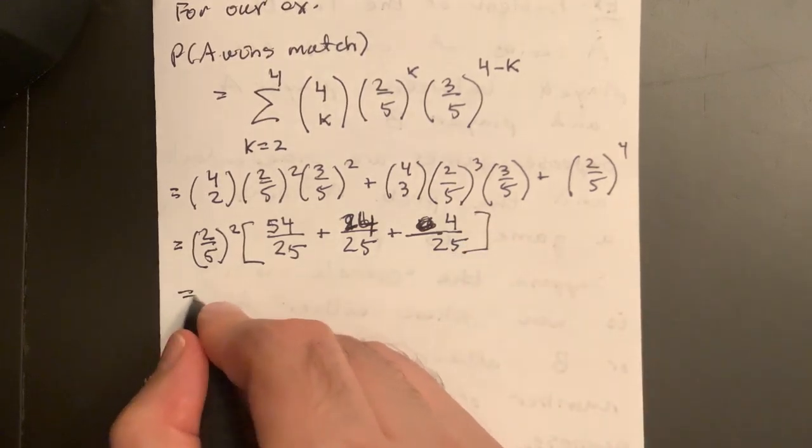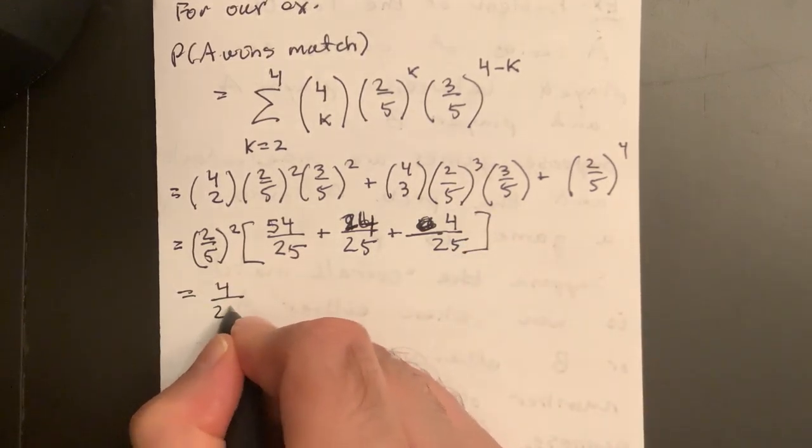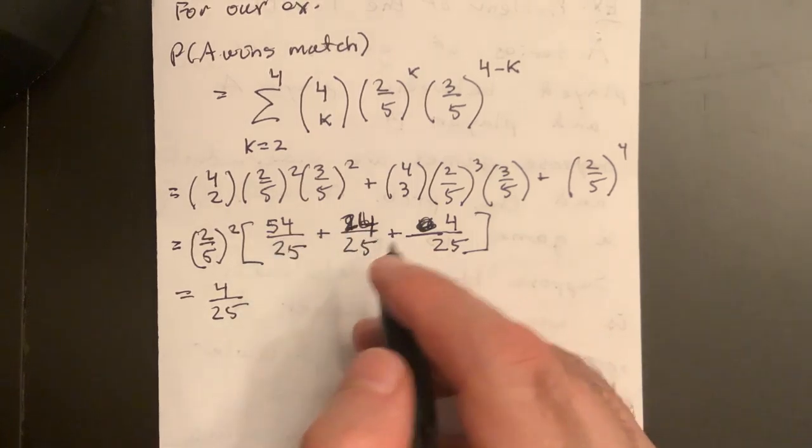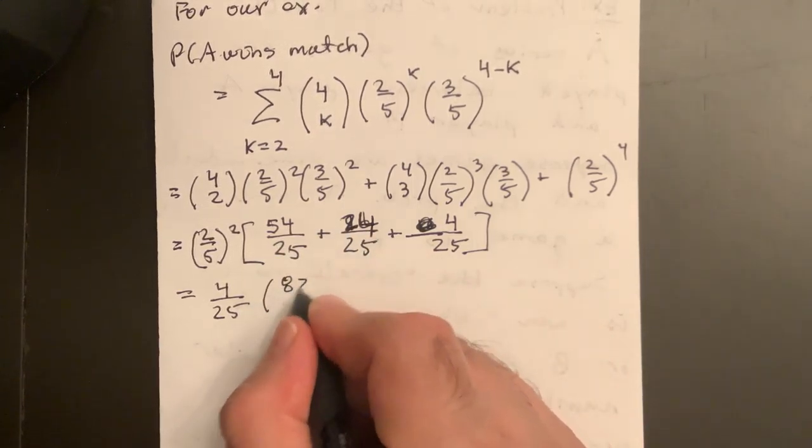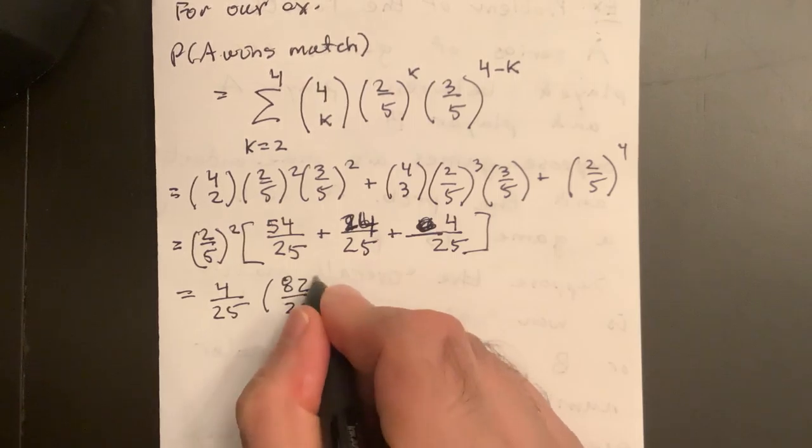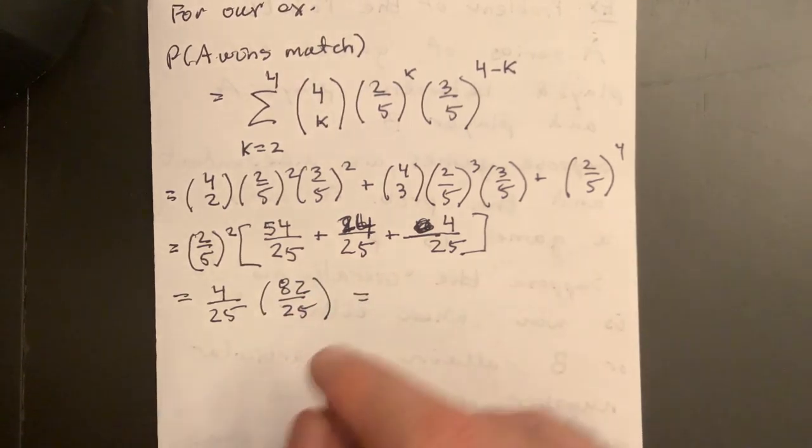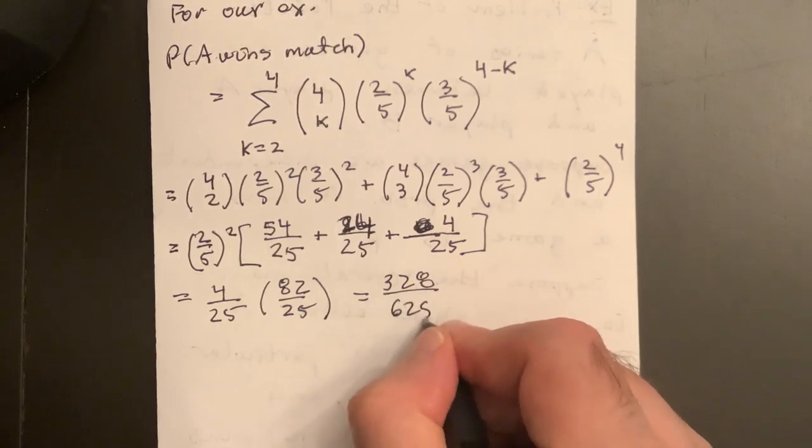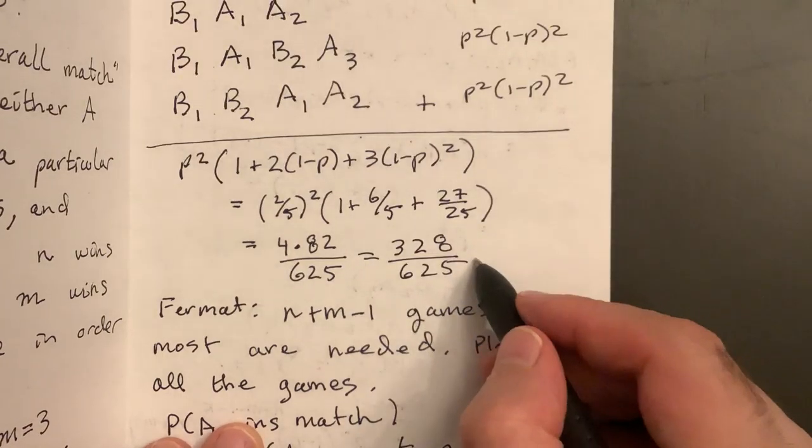So this is equal to four over 25 times 78, 82 over 25. If I multiply these, I get 328 over 625. Same thing.